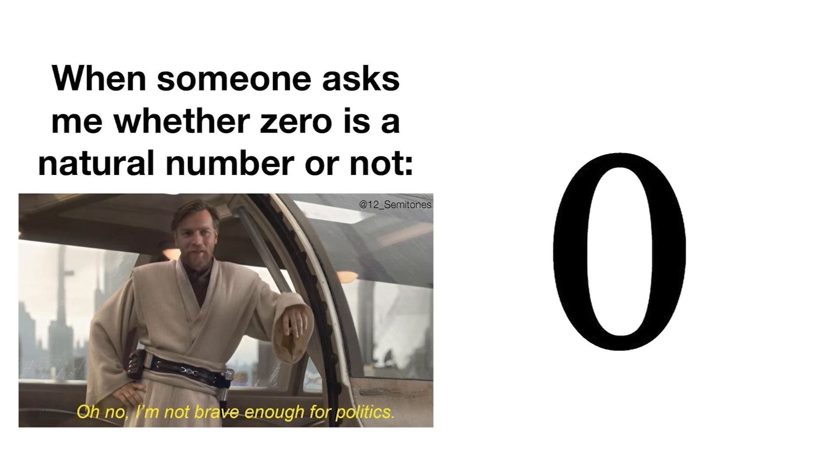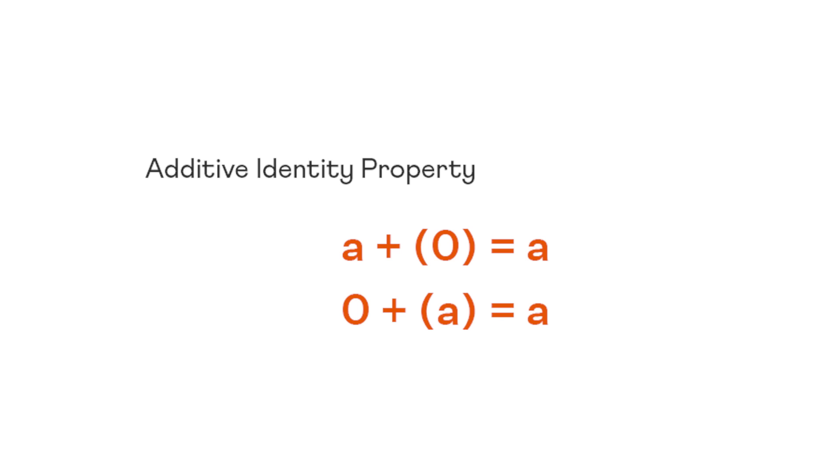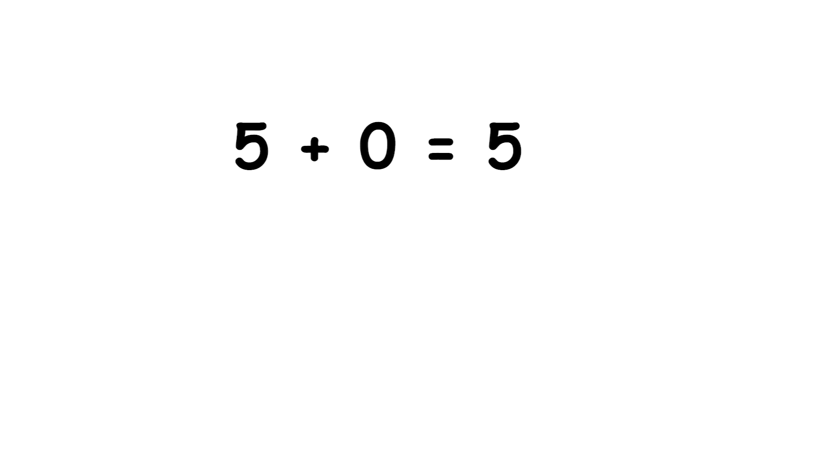Zero is a fundamental concept in mathematics that represents the absence of quantity or magnitude. It is one of the most important and widely used constants in various branches of mathematics and science. It is the additive identity, meaning that when added to any number, it leaves the number unchanged. For example, 5 plus 0 is 5, and 0 plus negative 3 equals negative 3.